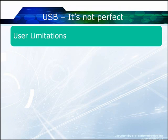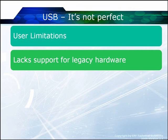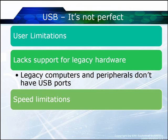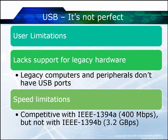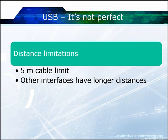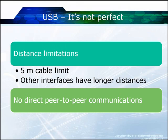USB is not perfect — there are user limitations. It lacks support for legacy hardware; old computers don't have USB ports, though that has faded as an issue. There are speed limitations: it's not as fast as 1394B, the second version of FireWire. There are distance limitations — a five meter cable limit — though other interfaces have longer distances. Keep in mind USB is meant for a peripheral connectivity environment, not long distances. There is also no direct peer-to-peer communication; USB OnTheGo provides what looks like peer-to-peer without a host, but it is not truly direct peer-to-peer.